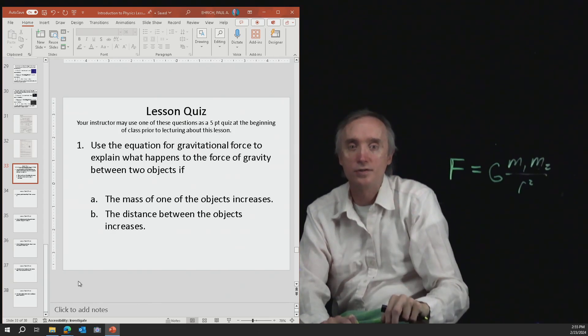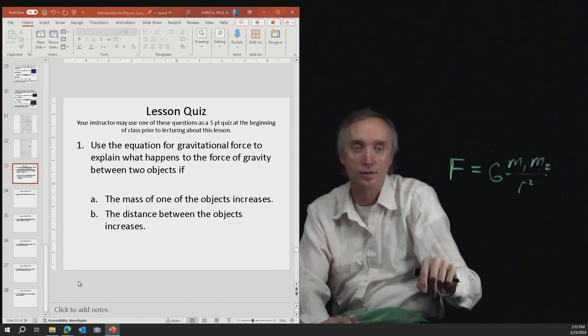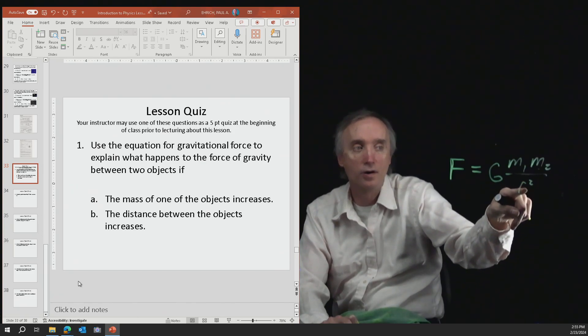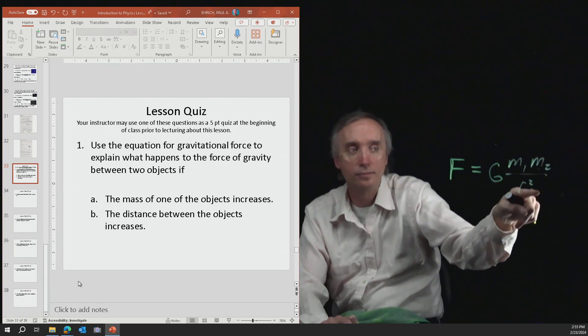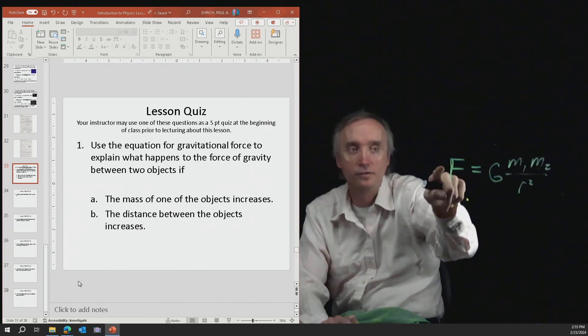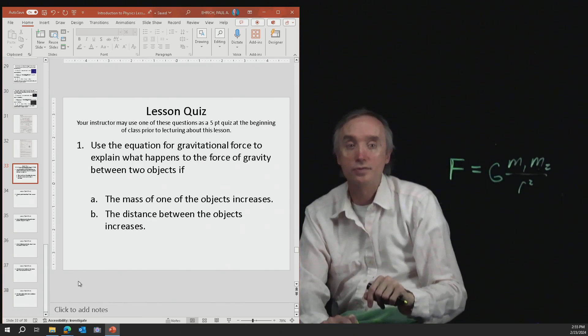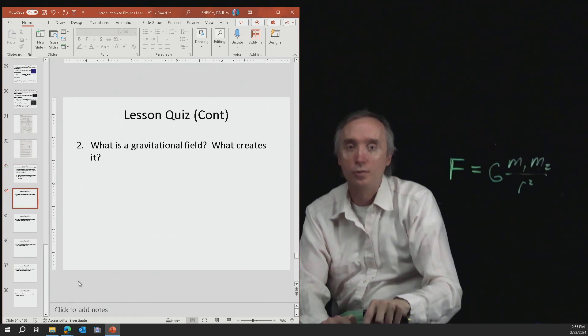On part B it says what happens if the distance increases. So if the R gets bigger, it's in the bottom part of the formula, then the force of gravity gets smaller.